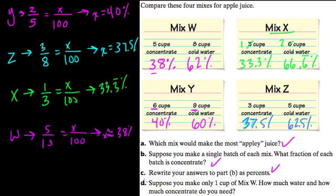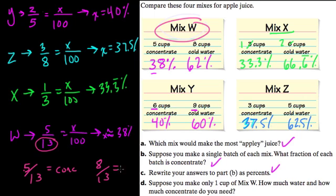And then one more question. Suppose you make only one cup of mix W. How much water and how much concentrate do you need? Well, we've already answered that question. In fact, it's kind of already written here in this fraction, 5 thirteenths. When we add up 5 cups of concentrate and 8 cups of cold water to get a whole here of 13, what does that mean? Well, that means that if you cut all of this down to 1 cup, 5 thirteenths of that cup would be concentrate. And 8 thirteenths would be water. So it's already written in a sense in this fraction. We meant it's 5 cups out of 13 cups, but imagine that if you scale that down, that also could represent 5 thirteenths of a cup. And if we add up these two together, we do get 1 cup.